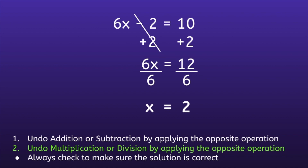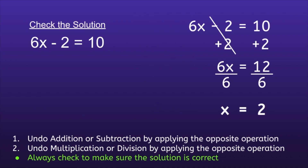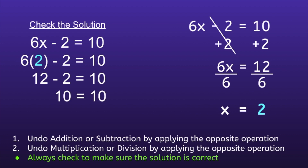But we're not done quite yet, because we always want to check to make sure our solution is correct. So we can rewrite the original equation: 6x minus 2 is equal to 10, and replace the x with our answer, which was 2. Since that 6 was in front of the x, that means we are multiplying. So we have 6 times 2 minus 2 is equal to 10. Well, 6 times 2 is 12, and 12 minus 2 is equal to 10. Since both sides are equal, we know our solution is correct. The final answer is x is equal to 2.